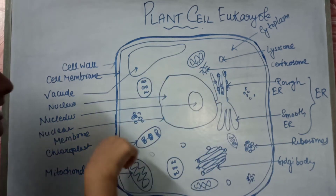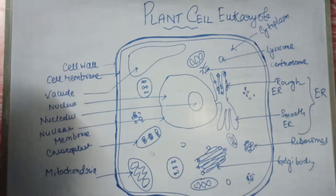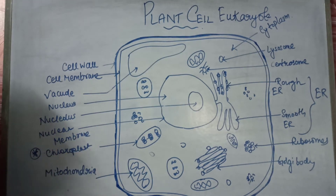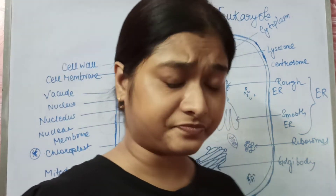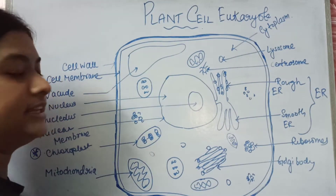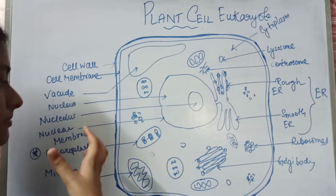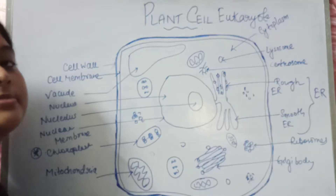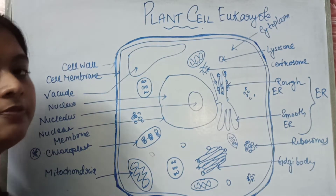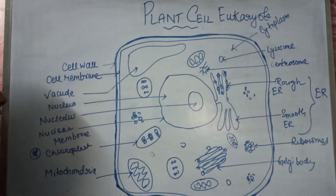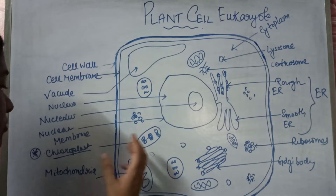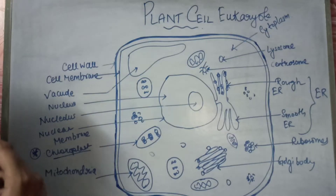Then comes the chloroplast, which is the significant and specific constituent mostly present in the plant cell. The chloroplast contains plastids and, more specifically, chlorophyll molecules. These chlorophyll molecules help in the evolution of O₂ and in the formation of food — that is, the process of photosynthesis occurs in the chloroplast. It is also a double membrane-bound organelle.